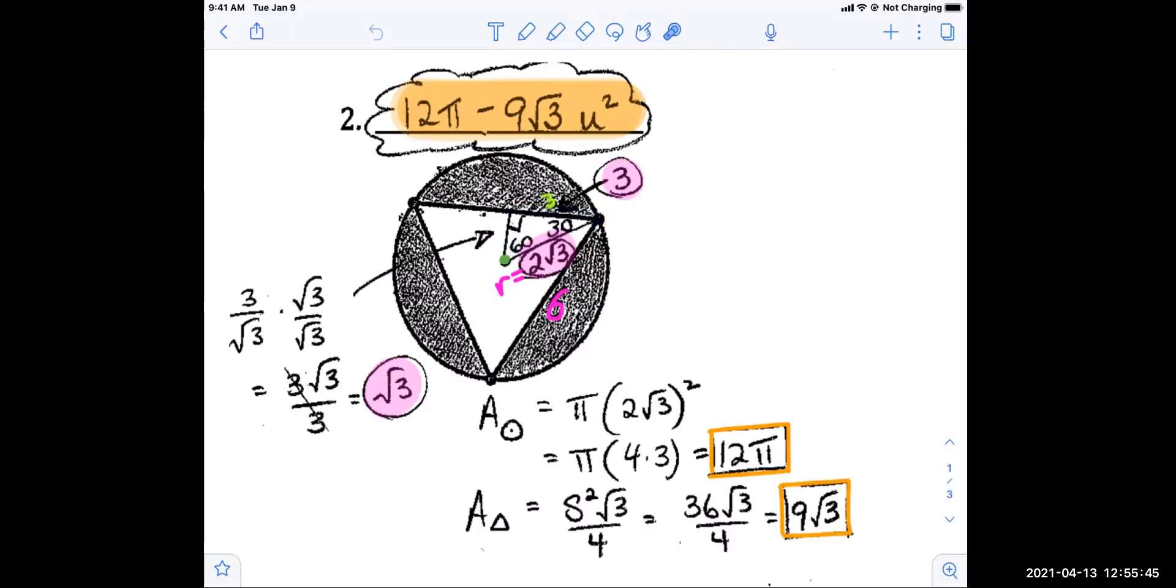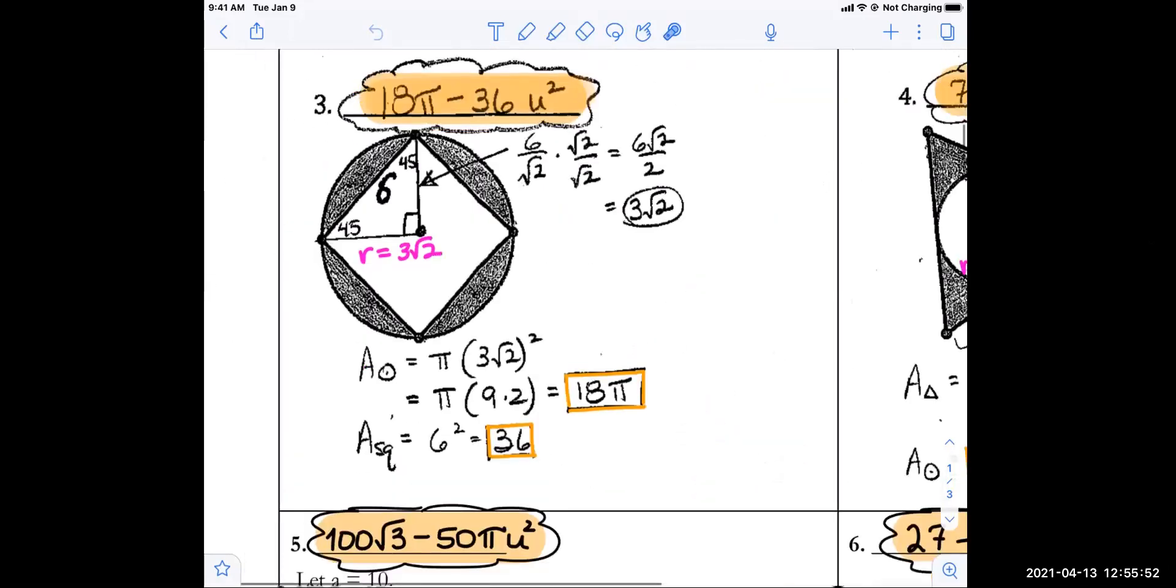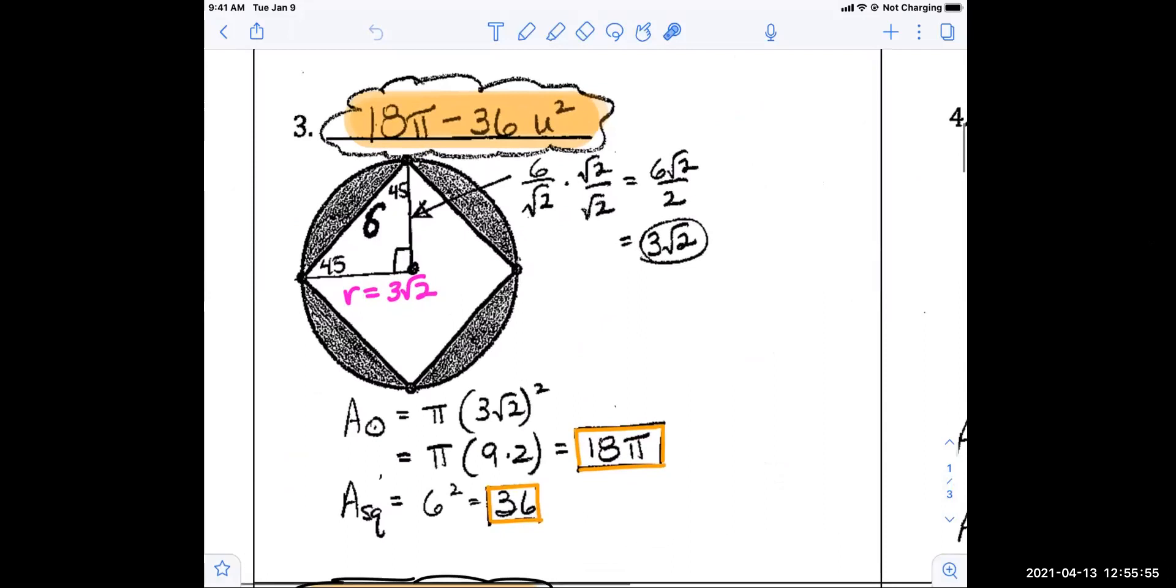And again, be careful when you're squaring two root three that you get that two squared. Okay. And again, on this one, a couple of different ways you can do that. I used one 45, 45, 90 triangle with hypotenuse being six. That makes the legs, which are the radius, radius of the circle, three root two.